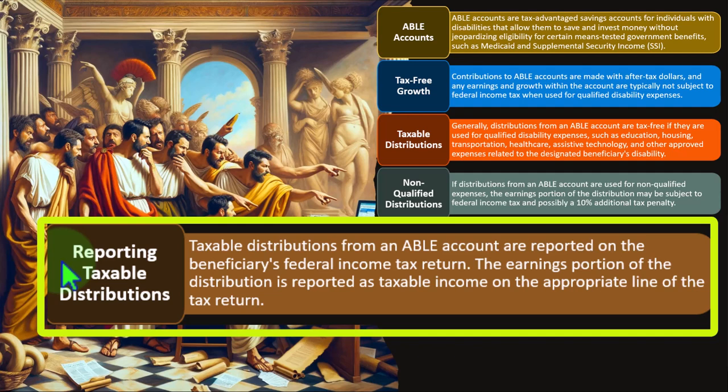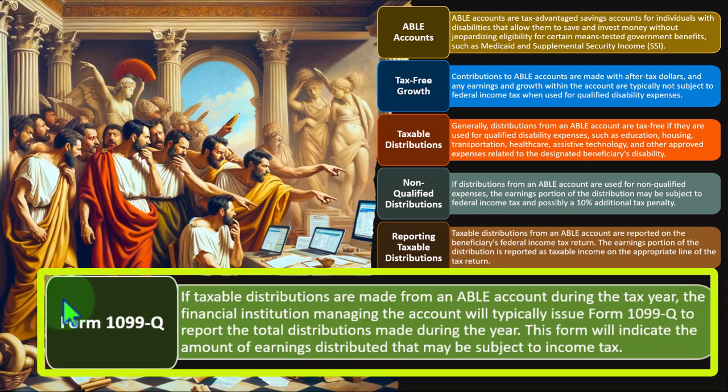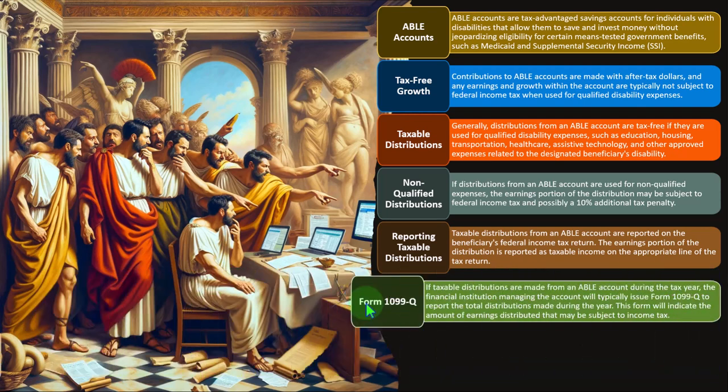Reporting taxable distributions: taxable distributions from an ABLE account are reported on the beneficiary's federal income tax return. The earnings portion is reported as taxable income on the appropriate line. If taxable distributions are made during the tax year, the financial institution managing the account will typically issue a Form 1099-Q to report total distributions, indicating the amount of earnings distributed that may be subject to income tax.